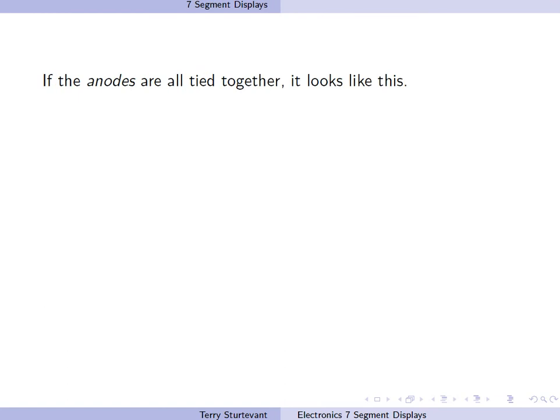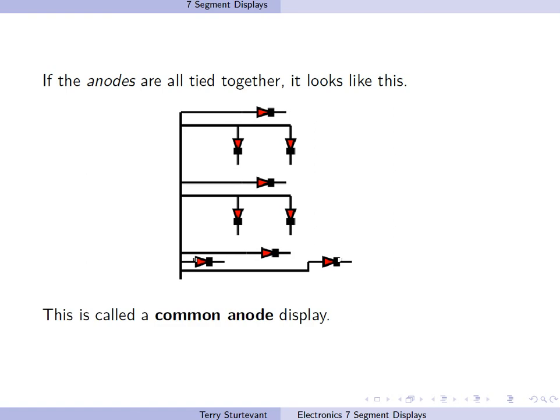If the anodes are all tied together, it looks like this. This is called a common anode display.